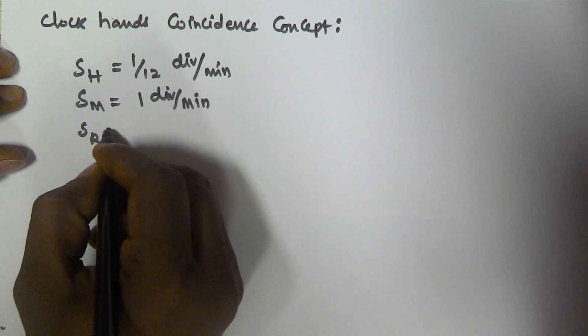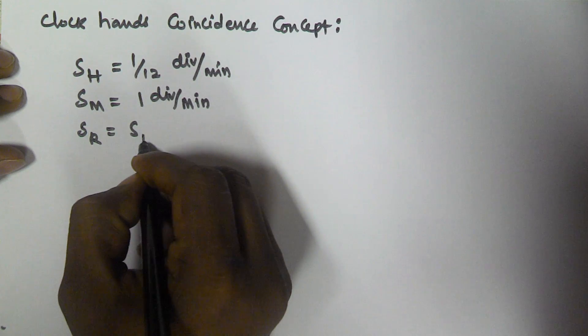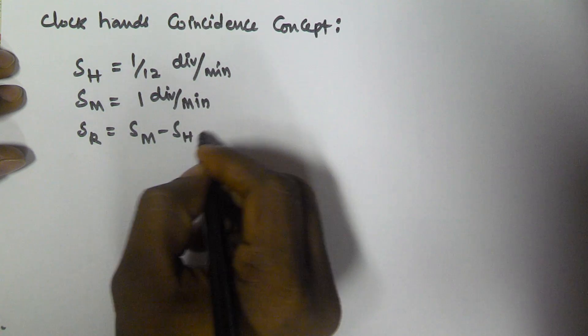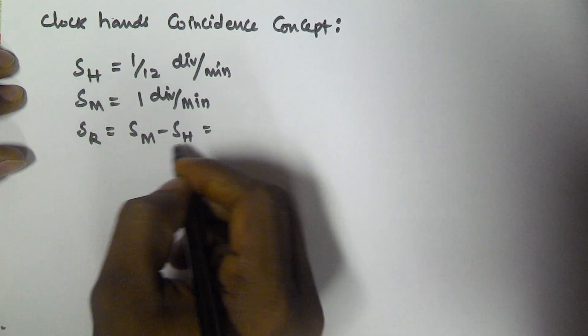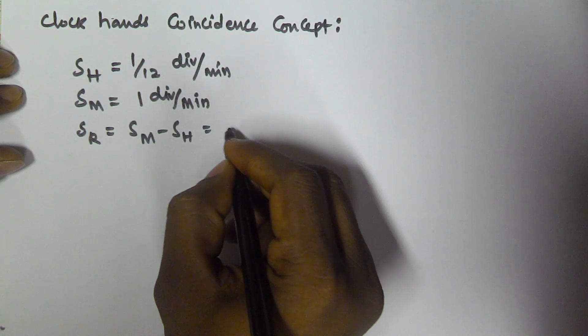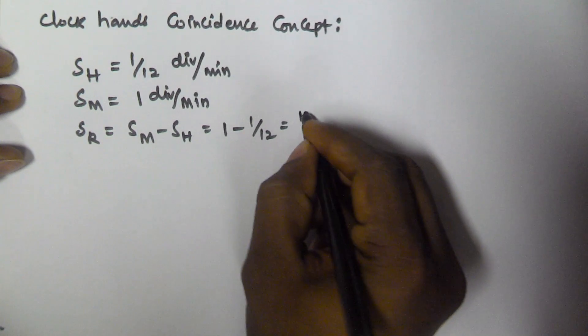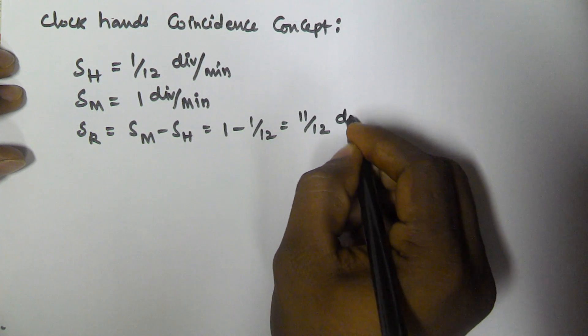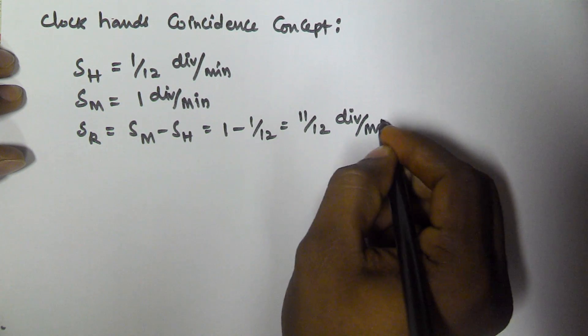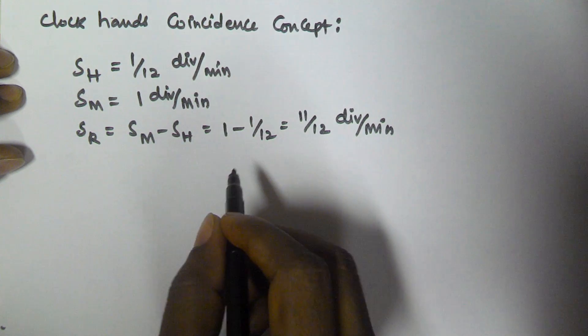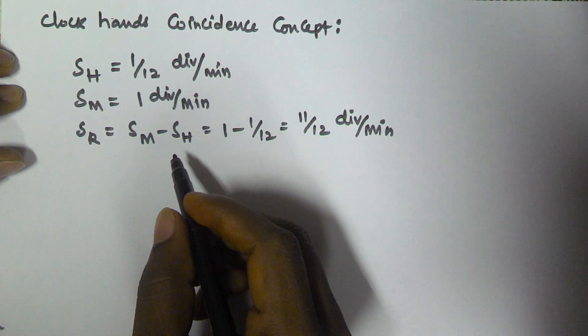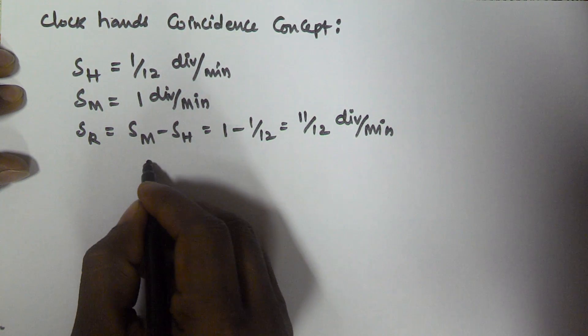So the relative speed is SM minus SH as the speed of minutes hand is faster than hours hand. So 1 minus 1 by 12 is equal to 11 by 12 divisions per minute. As we know, there are 60 divisions out there in the clock.